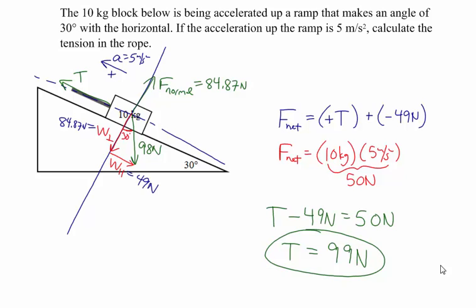Newton's second law says the net force equals mass times acceleration. The mass is 10 kilograms times 5 meters per second squared, giving a net force of 50 Newtons. Putting those two ideas together: tension minus 49 Newtons equals 50 Newtons, so the tension in the rope is 99 Newtons. These problems of lifting and lowering along a ramp are almost identical to lifting and lowering straight up and down — the only difference is we use the parallel component of the weight instead of the full weight.